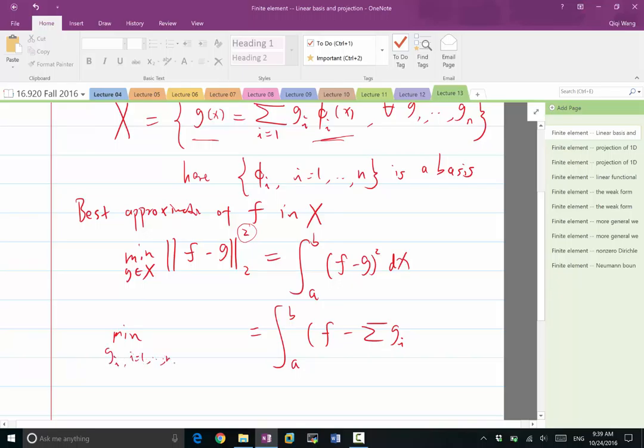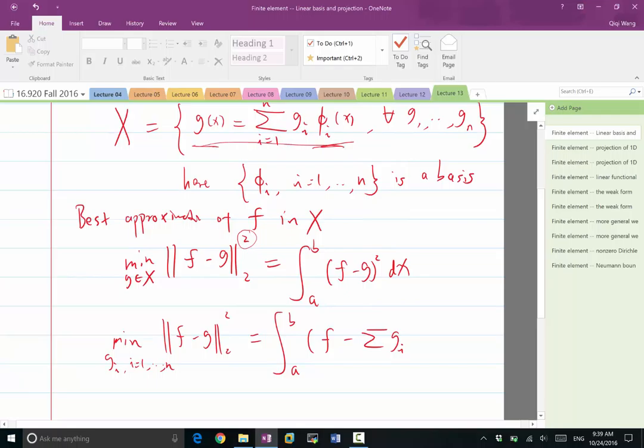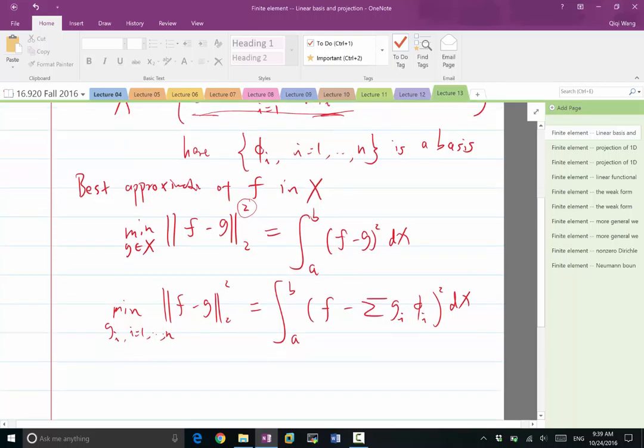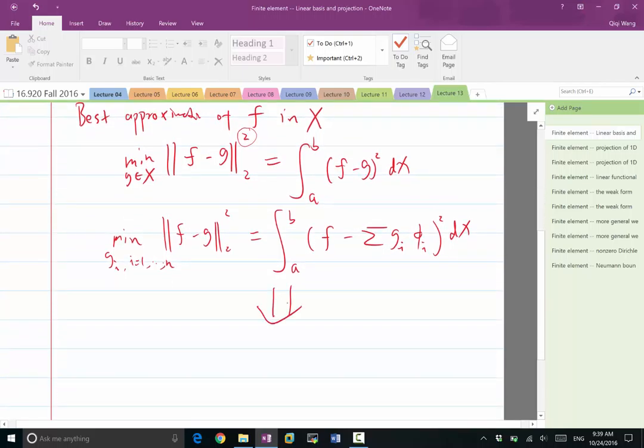i goes from 1 to n. We are minimizing over these coefficients because we can represent g using linear combination of the basis: sum g_i * phi_i squared dx. And we turn that optimization problem into a set of linear equations.